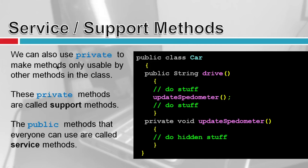We can also use private to make methods only usable by other methods in the class. These private methods are called support methods. For example, I might create a public drive function that calls a private updateSpeedometer function internally. I don't want users to fudge their odometer, so I make updateSpeedometer private — but I can still call it from within the car class.